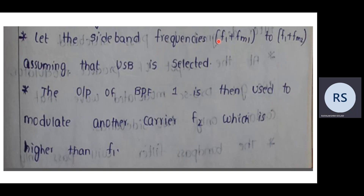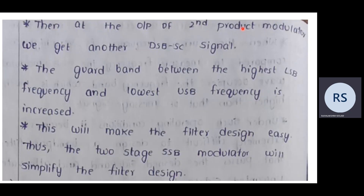Here we let the sideband frequencies run from f1+fm1 to f1+fm2, assuming USB is selected. The output of bandpass filter one is used to modulate another carrier f2, which is higher than f1. At the output of the second product modulator, we get another DSB signal such that the gap between the highest LSB frequency and lowest USB frequency is increased. This makes filter design easier, simplifying the two-stage SSB modulator design.